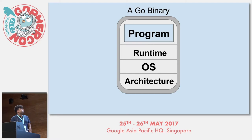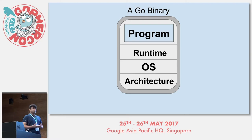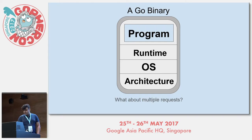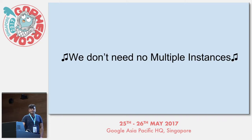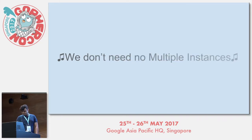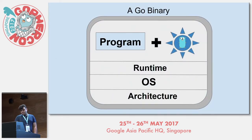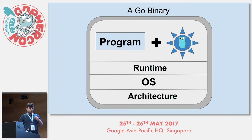A Go binary is basically your source code and program, and it also includes the runtime — the code required for runtime operation, how to operate for an operating system, and some of the instructions required for your given CPU architecture. If we want to handle multiple requests, we don't need multiple instances, and the reason for that is GoRoutines — they handle concurrency for us. Even if you only use Go's standard library, which is net/http, you're still getting concurrency for free.